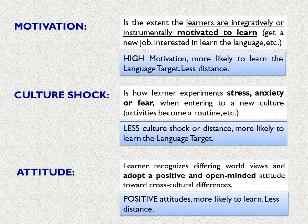The second psychological factor is culture shock — it is how the learner experiences stress, anxiety, or fear when entering a new culture. Less culture shock means less distance and a greater likelihood of learning the target language. The third psychological factor is attitude: the learner recognizes differing worldviews and adopts a positive and open-minded attitude toward cross-cultural differences. Positive attitudes mean more likelihood to learn and less distance.